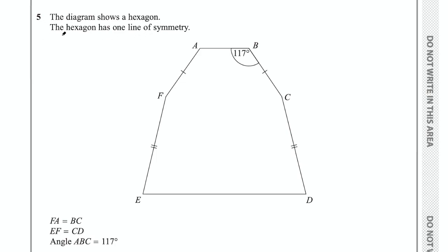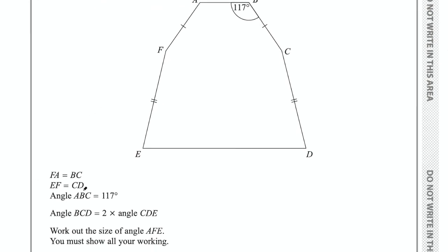This question says the diagram shows a hexagon. The hexagon has one line of symmetry. Here we have the diagram, and it says FA equals BC, EF equals CD, angle ABC equals 117 degrees, and all of that is marked in. We have these lines indicating those lengths are the same and that angle is 117 degrees.